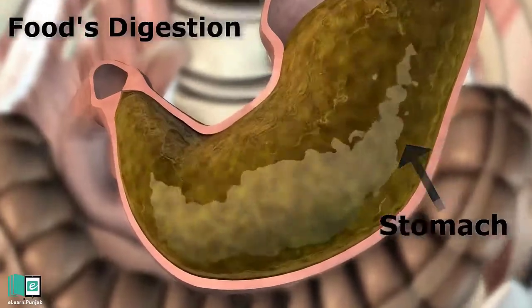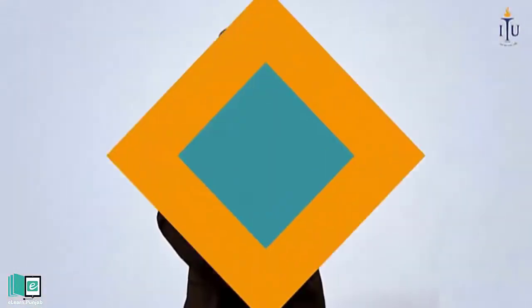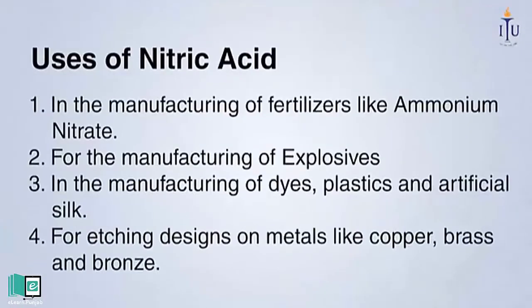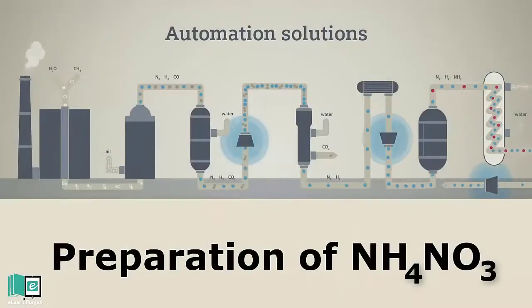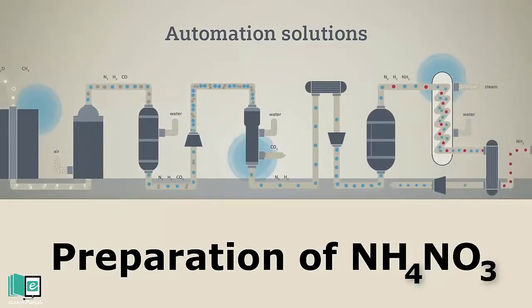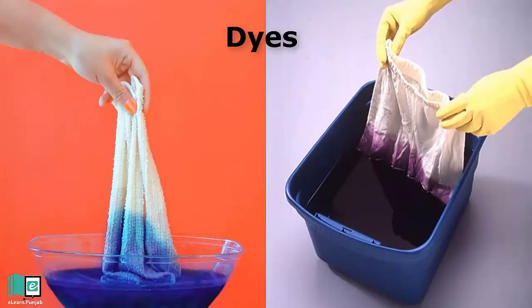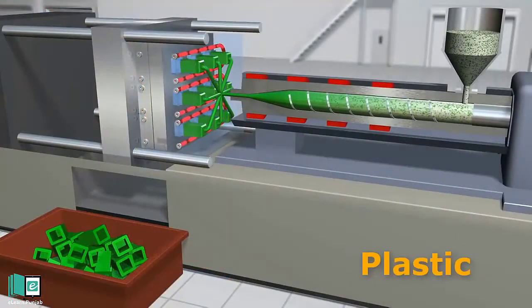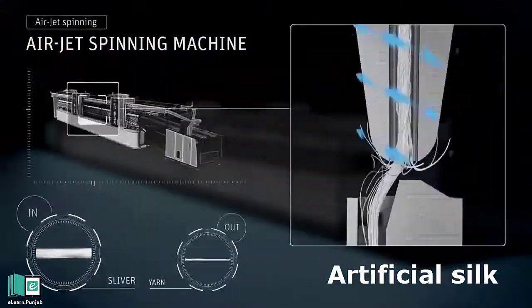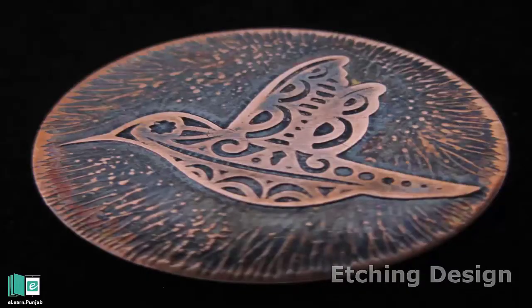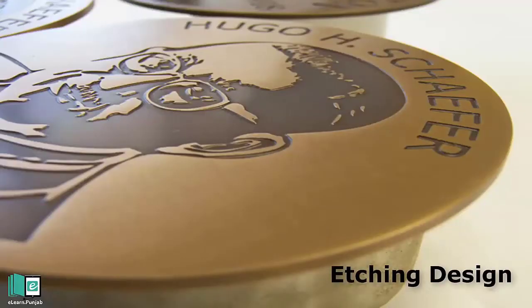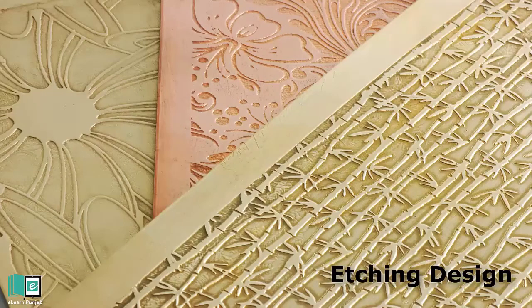Number 4: For making glucose from starch. Number 5: For the digestion of food in our stomach. Uses of Nitric Acid — Number 1: In the manufacturing of fertilizers like Ammonium Nitrate, NH₄NO₃. Number 2: For the manufacturing of explosives. Number 3: In the manufacturing of dyes, plastic, and artificial silk. Number 4: For etching designs on metals like copper, brass, and bronze.